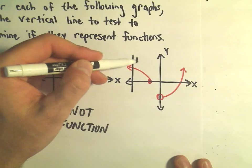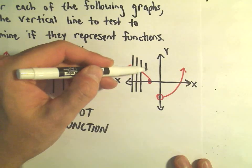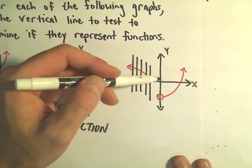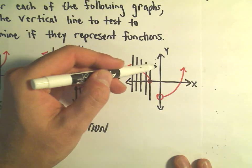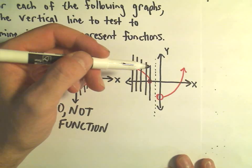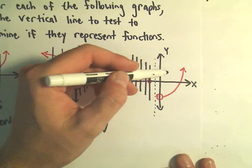Because no matter where I put a vertical line, it's going to hit the graph in at most one place. Notice there's some places where the vertical line won't hit the graph at all, but that's okay, as long as vertical lines don't hit it in two or more places.